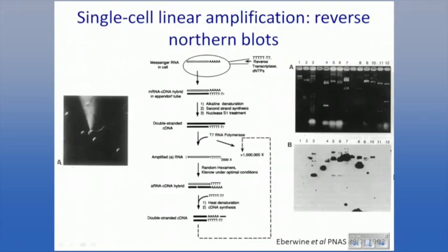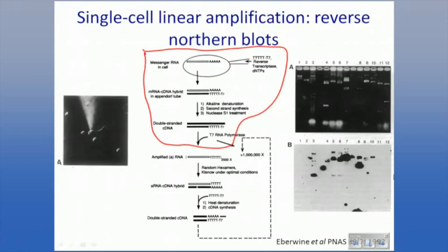If you want to do this from single cells, there isn't very much RNA, so you may need to do more than one round. As demonstrated by Jim Eberwine's group: you start with the oligo-dT T7 primer, make cDNA, do the amplification step with T7 RNA polymerase to get your amplified RNA, and then re-amplify with random hexamers for another 400- to 1,000-fold amplification. You can actually do three or more rounds in theory.